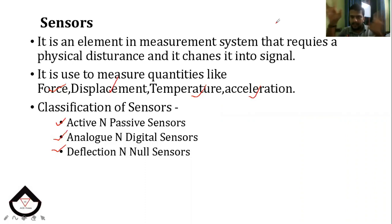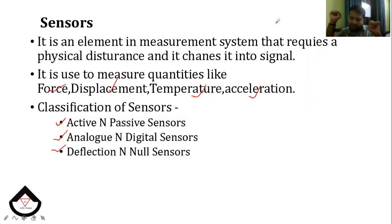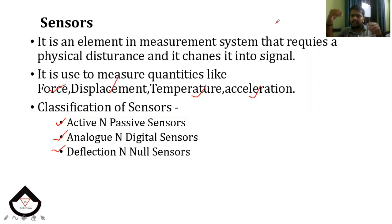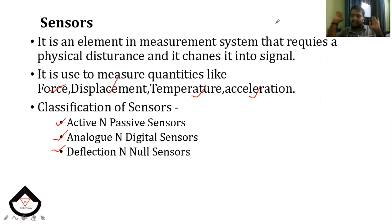Analog and digital sensors. For a digital sensor, the signal produced or reflected by the sensor is binary. In the case of analog, the signal produced by the sensor is continuous and proportional to the measurement.